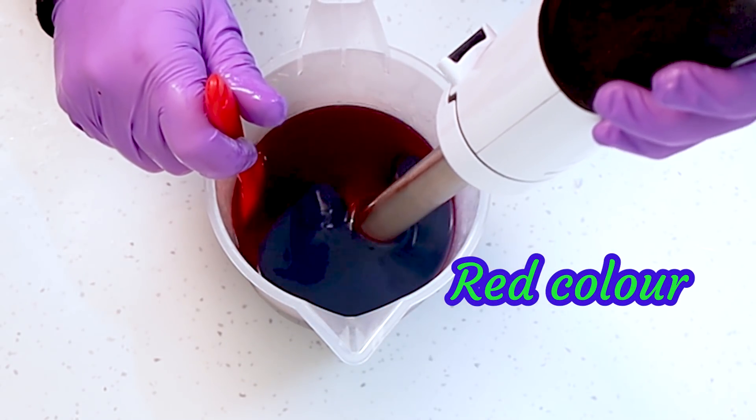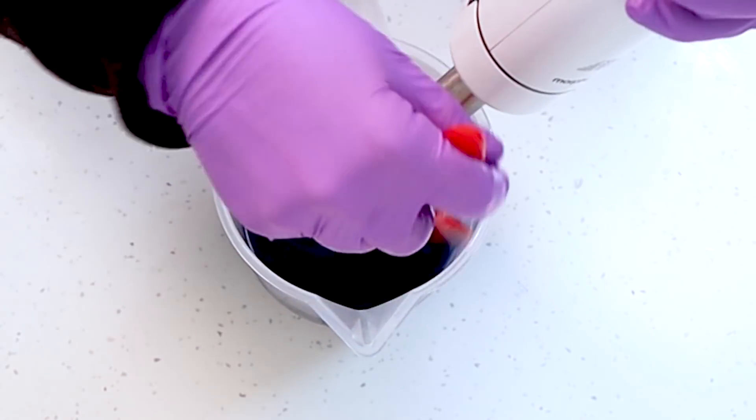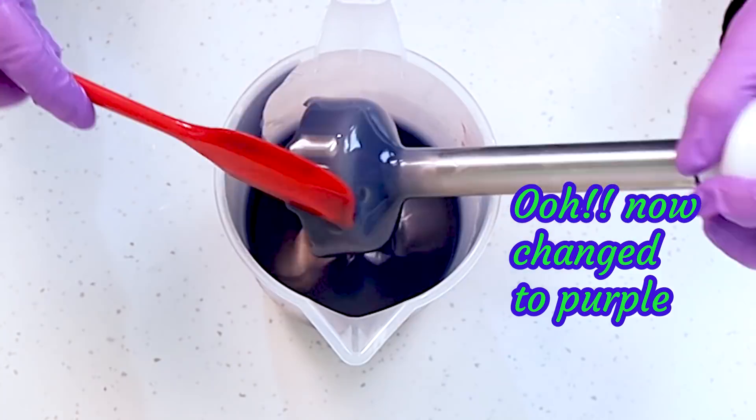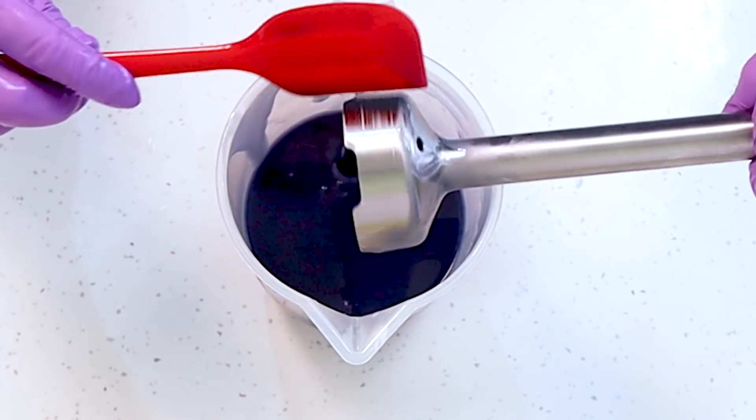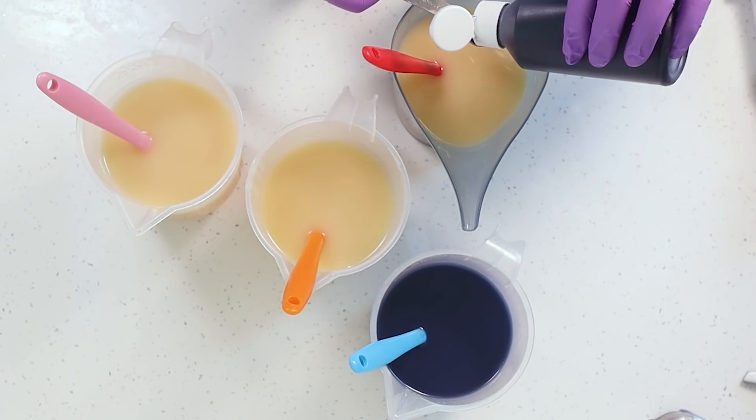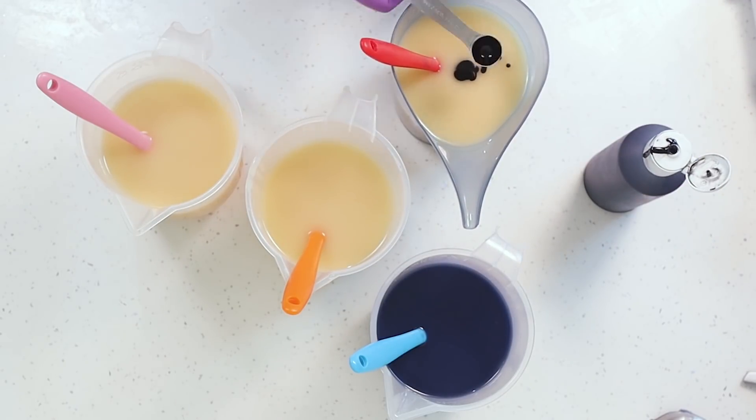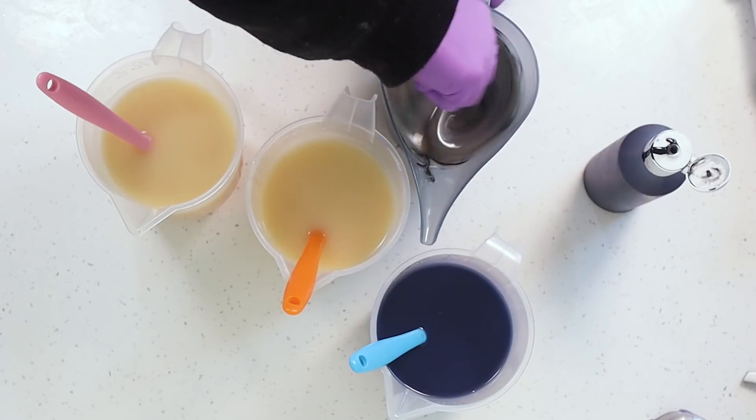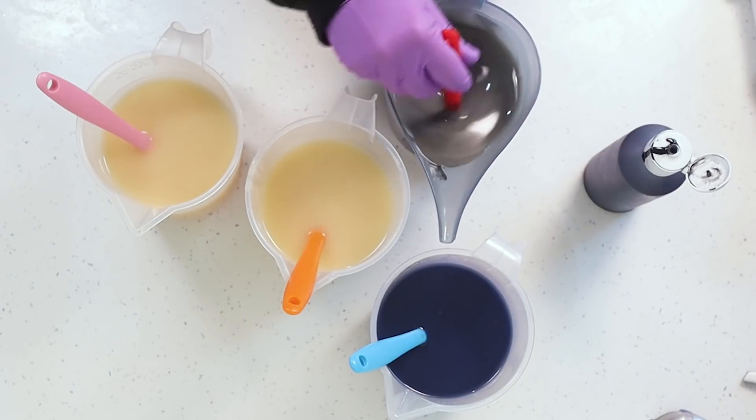And then on to my other colors. So first of all my activated charcoal. Now normally to get a black I'd use activated charcoal at a rate of one and a half teaspoons per pound of oil. At the diluted rate that would be one and a half tablespoons. But here I just want a gray so I'm just going to use half a teaspoon of my diluted activated charcoal in this batter.